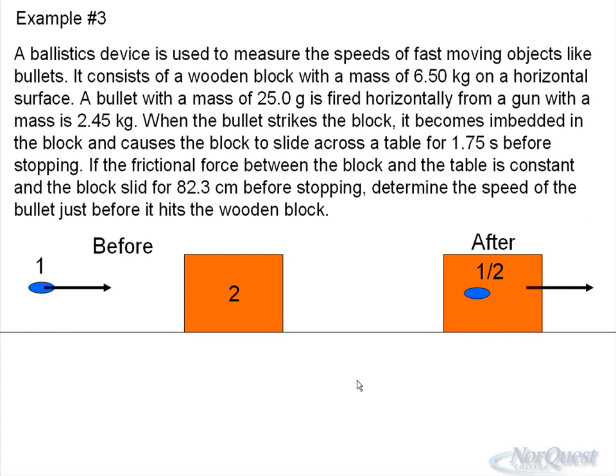When the bullet strikes the block, it becomes embedded in the block and causes the block to slide across the table for 1.75 seconds before stopping. If the frictional force between the block and table is constant and the block slid for 82.3 centimeters before stopping, determine the speed of the bullet just before it hits the block.